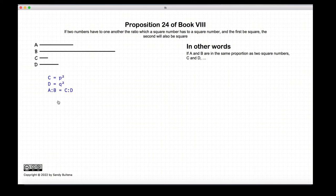And this proposition states that if we have two numbers, C and D, and two other numbers, A and B, and C and D are squares, and if A is also a square, then B is also a square.